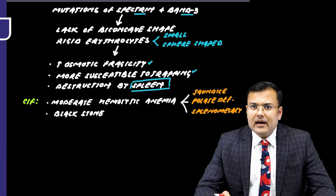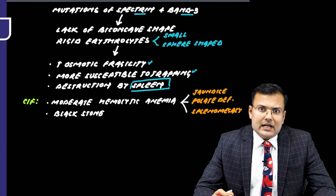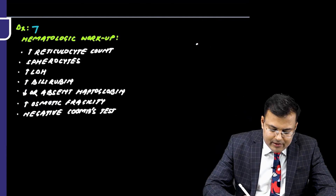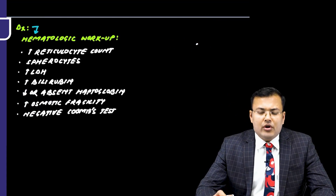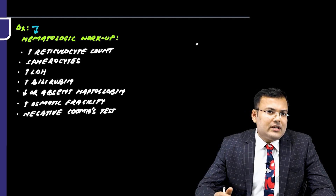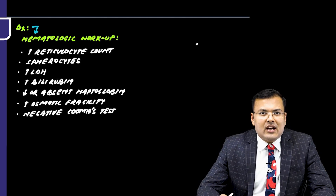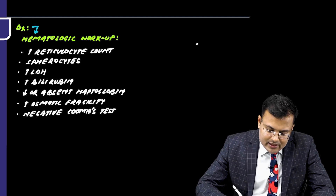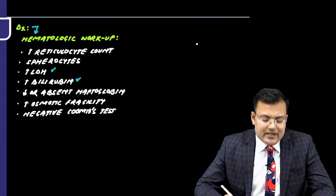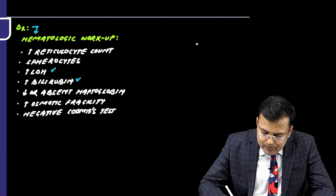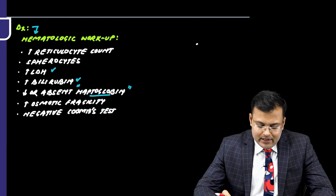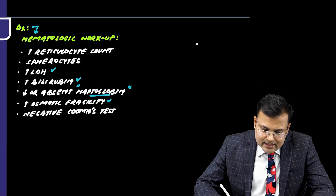Diagnosis is made by hematological workup. Since chronic hemolysis is ongoing, findings include: increased reticulocyte count due to bone marrow response, spherocytes on peripheral smear, increased LDH, raised indirect bilirubin, decreased or absent haptoglobin, increased osmotic fragility, and a negative Coombs test.